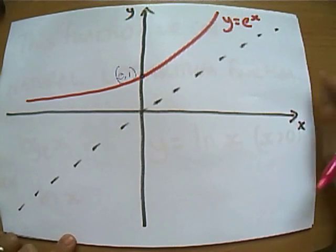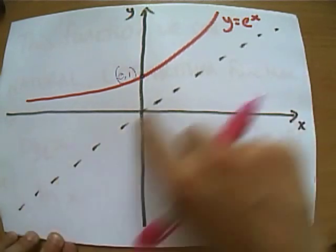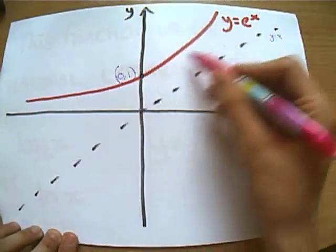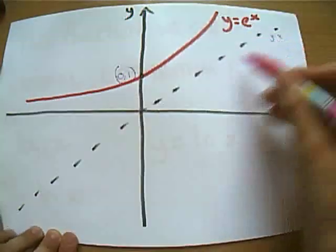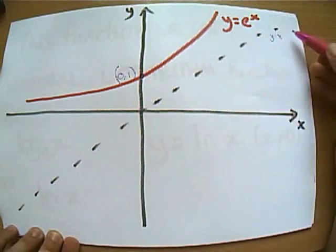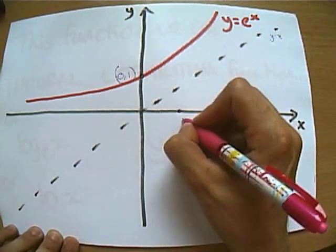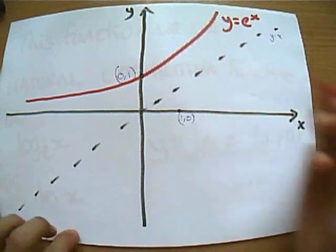Now, how do we find an inverse of a graph? You draw your line y equals x. And remember, we can swap all the x and the y coordinates around. And that will reflect it in this line and bring it out over here. So before it went through (0,1), the inverse function is going to go through (1,0).